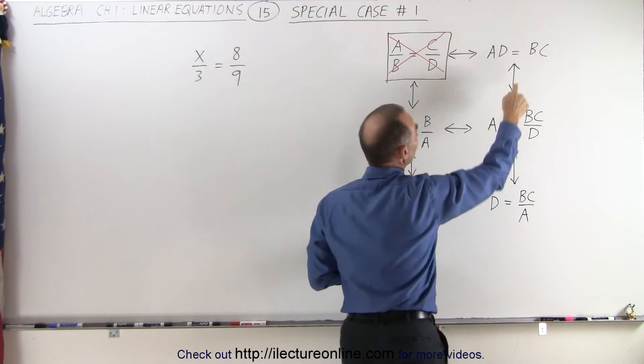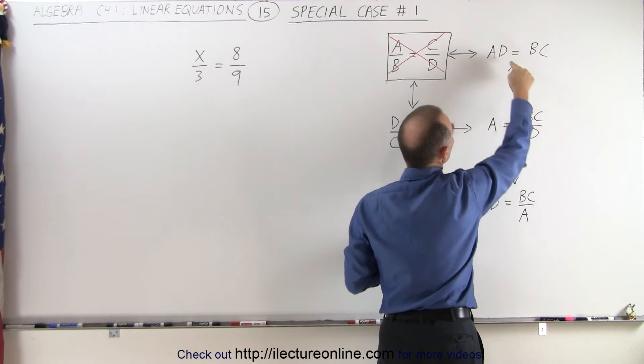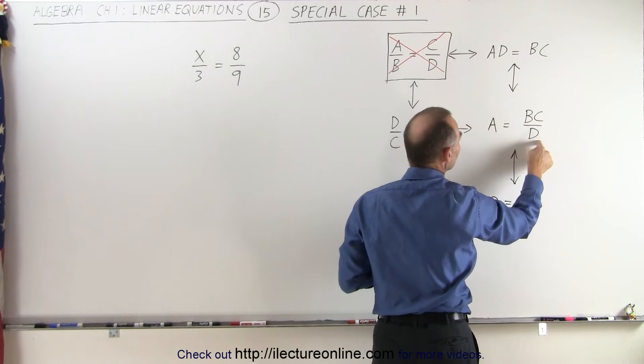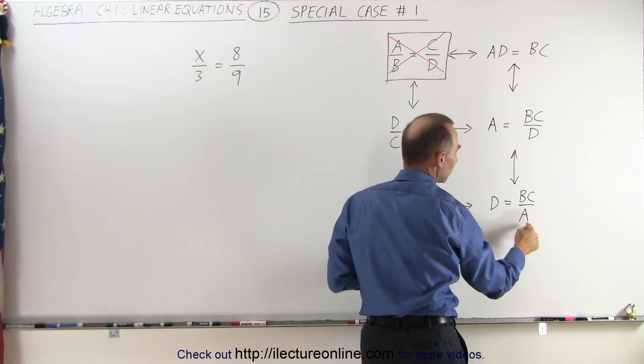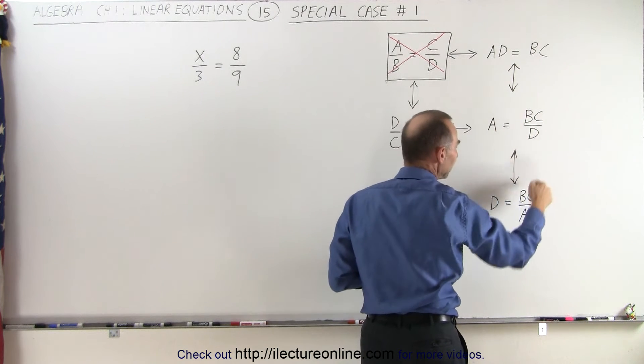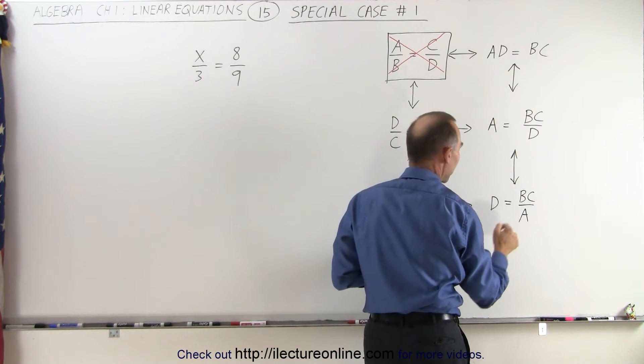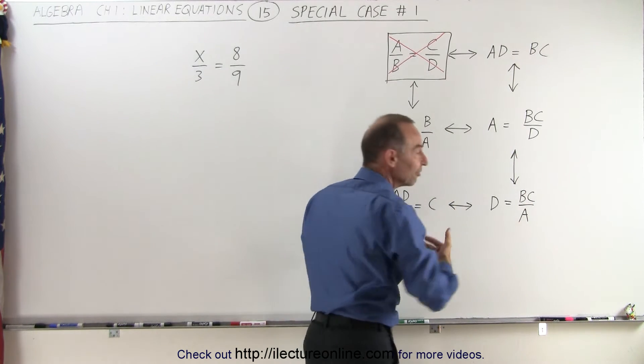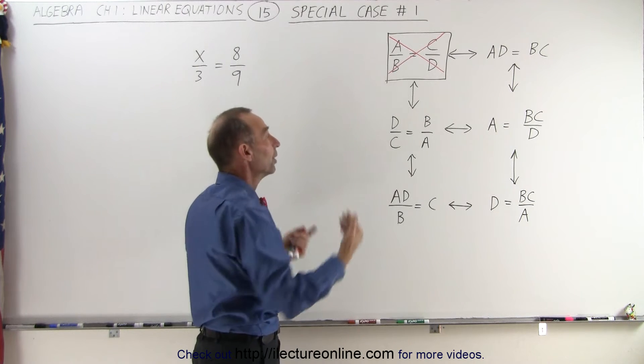Or, I can go from here to here. In other words, I can move the D down here and write A equals BC over D. Or, over here, I can move the D up and the A down, so I get D equals BC over A. And notice there's an infinite number of ways in which I can move things from one to another.